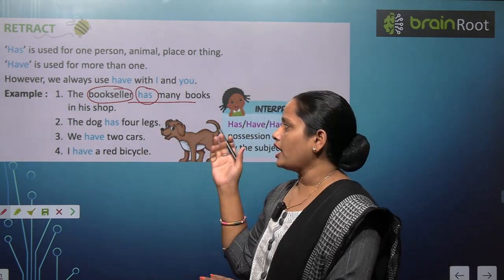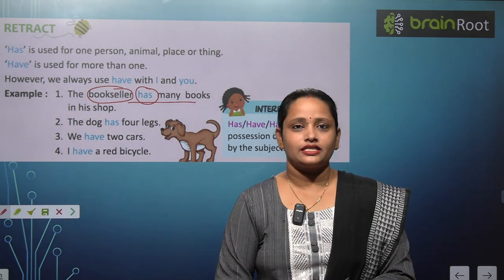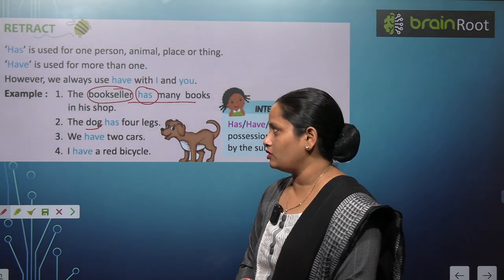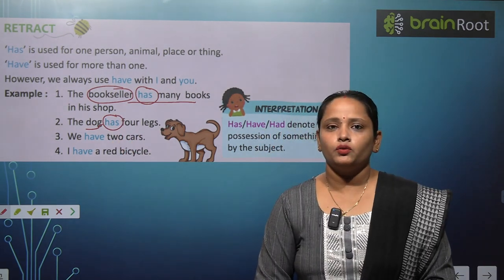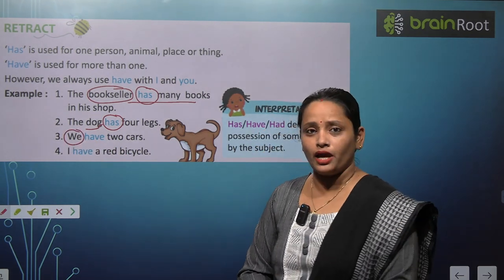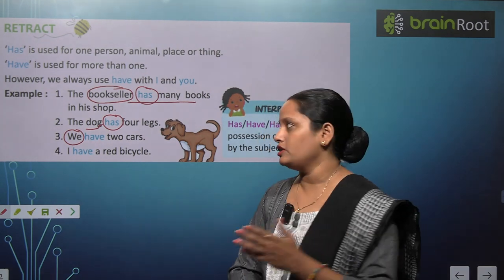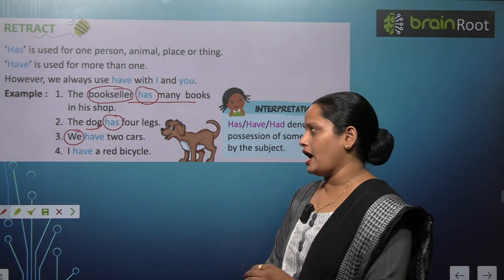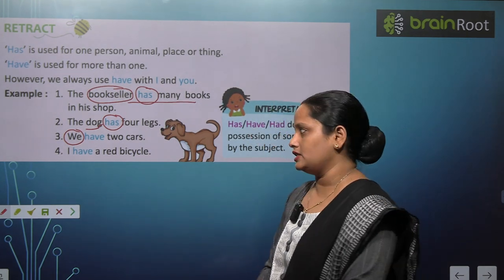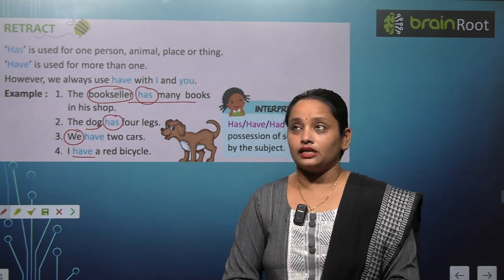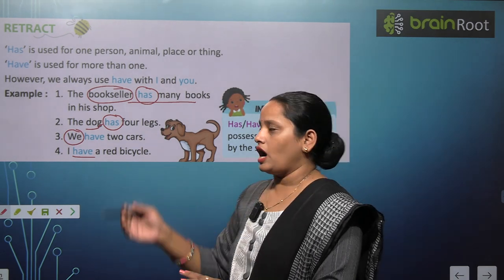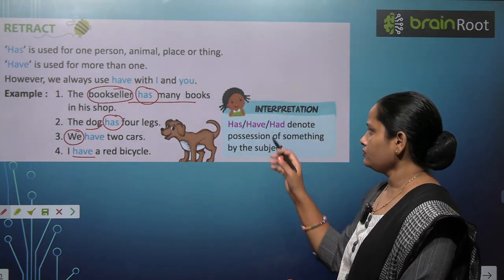Similarly, the second example: The dog has four legs. Dog ke paas kitne legs hai? Four. Kitne dog hain yahaan pe? Only one. So that's why we have used has here. Third one: We have two cars — we means plural, so we have to use have. Fourth example: I have a red bicycle. Kyunki I ke saath have lagana hai, toh yahaan pe again we will use have with I.